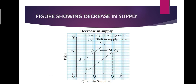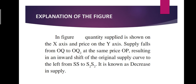Looking at the figure: at price OP, the original quantity supplied was OQ, so the original supply curve is SS. Now, at the same price, because of unfavorable changes in factors, quantity supplied decreased from OQ to OQ2. So the new supply curve is S2S2, which is a shift in the supply curve to the left. Quantity supplied falls from OQ to OQ2 at the same price OP, resulting in an inward shift of the original supply curve to the left from SS to S2S2. It is known as decrease in supply.